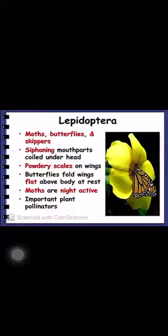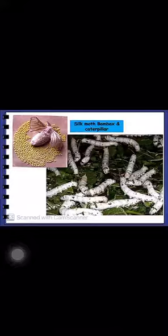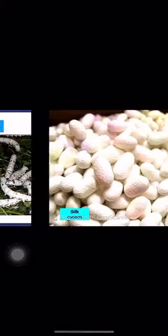In Lepidoptera we have moths, butterflies, and skippers. They have siphoning mouthparts and suck nectar from flowers. They are very good pollinators. The silk moth is used in the silk industry to produce silk material. Silk is produced from the silk moth called Bombyx mori. These are the cocoons of the silk moth from which silk fiber is taken out.